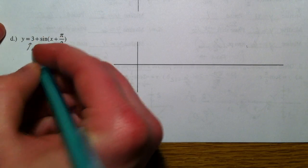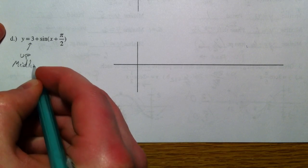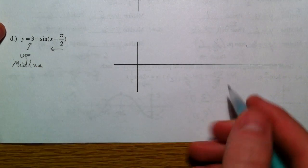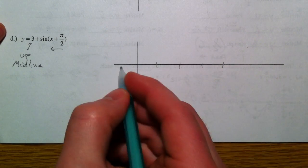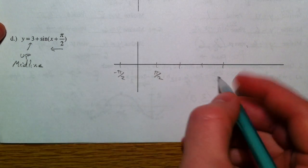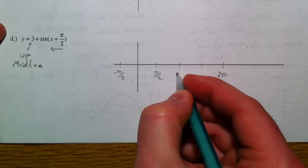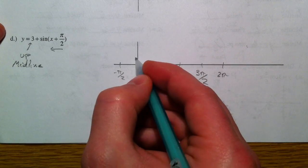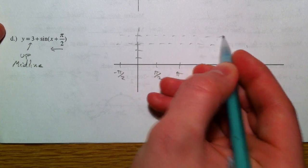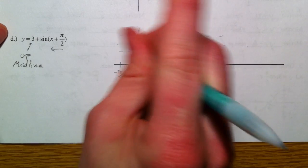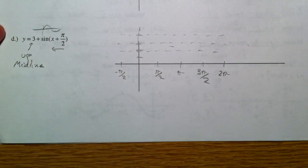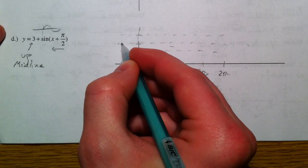The 3 is up — that's the midline. And the phase shift moves it to the left pi over 2. So I'm going to mark my axis; the period has not changed. This is negative pi over 2 because we're shifting by pi over 2, and that's where we're going to start. We went up 3, so the midline is 3. The amplitude is 1.